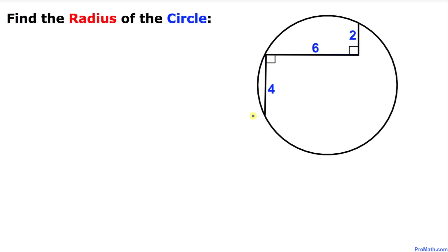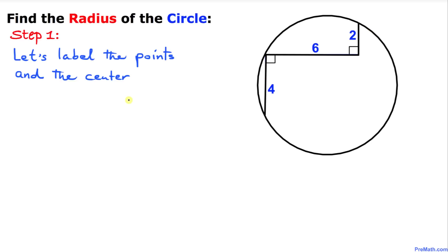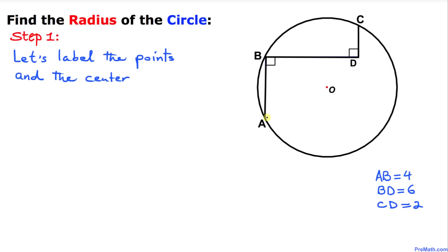Let's go ahead and get started with the solution. Here is our very first step: let's label the points and the center. The center is at point O, this point on the circle is point A, this point on the circle is point B, this point is C, and this point is D. Here is our much nicer looking diagram with points A, B, C, D and the origin O.